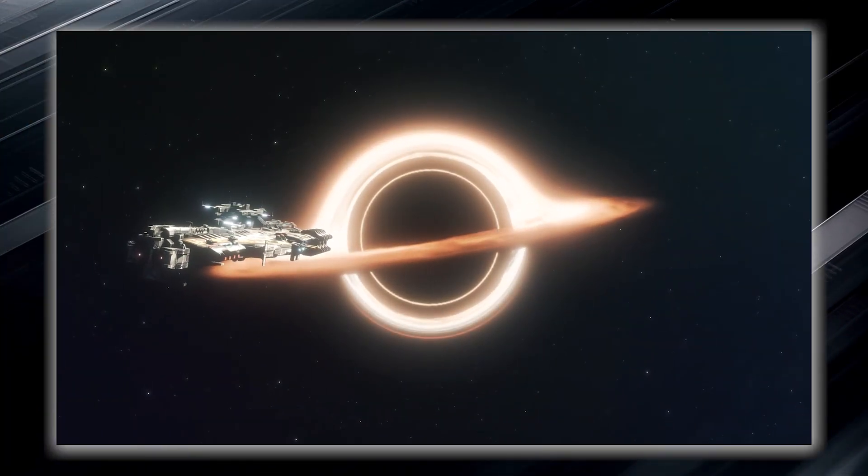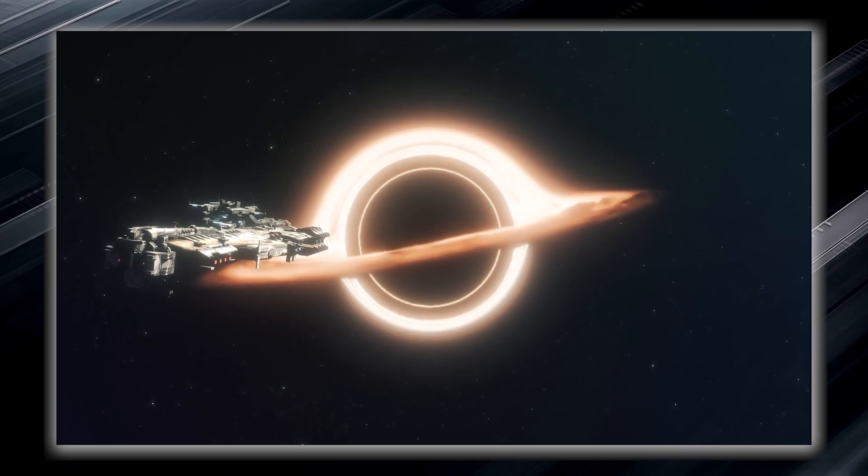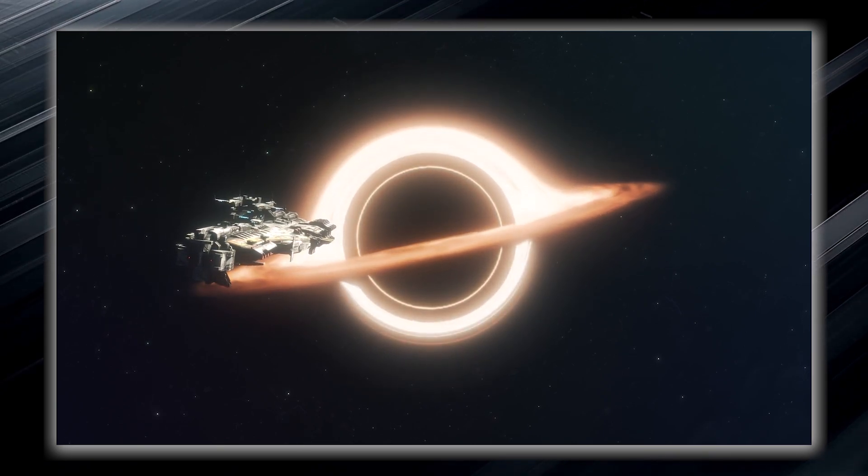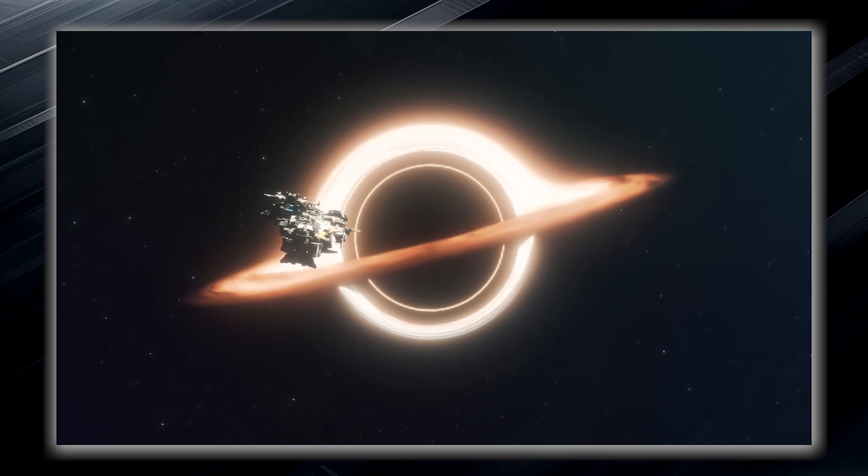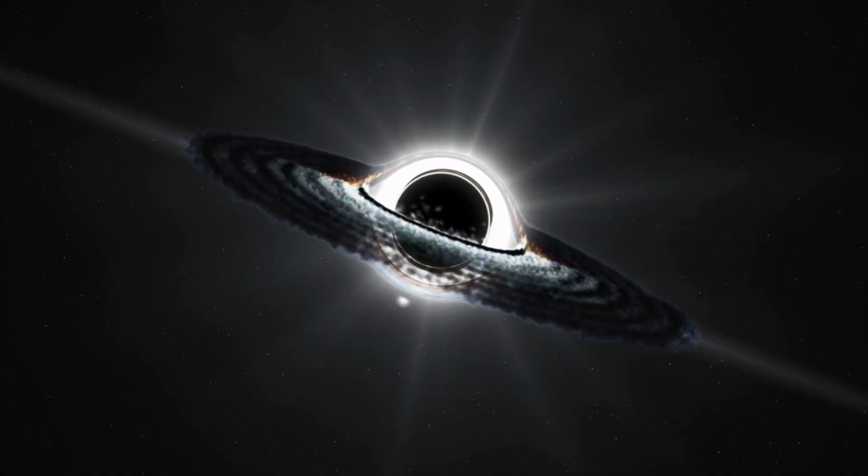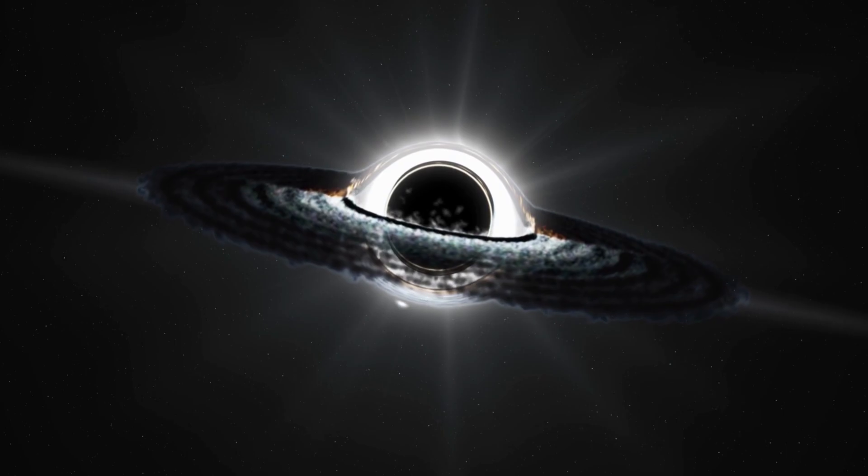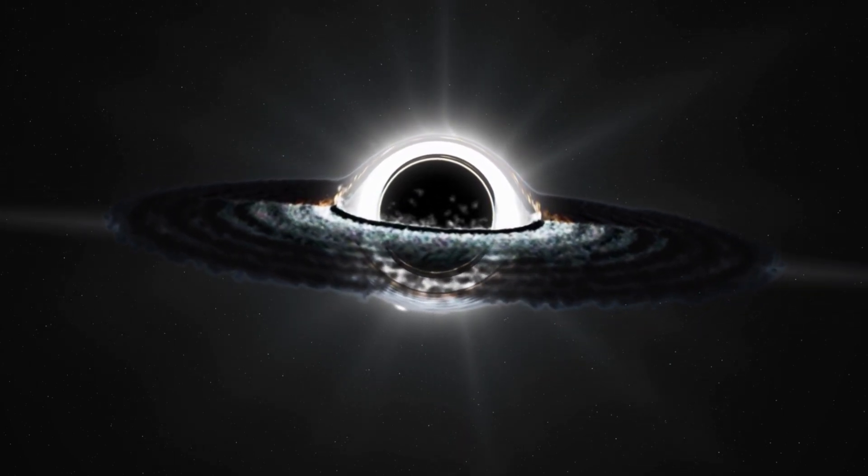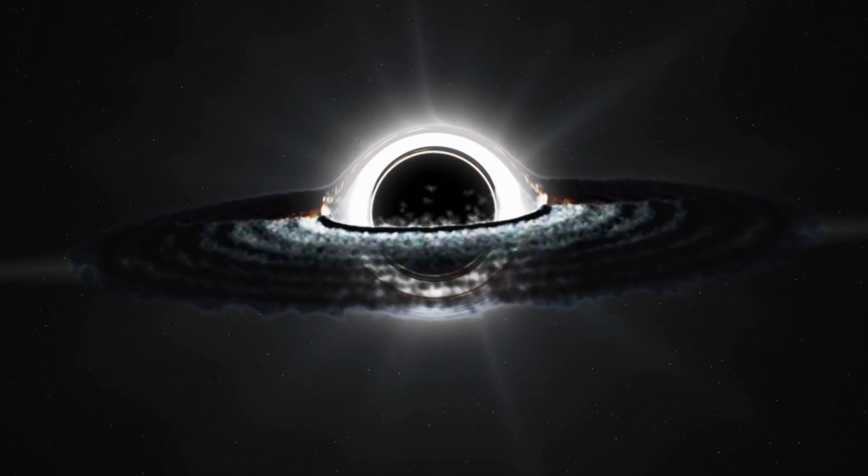Once something, such as an unfortunate spacecraft or even light, crosses its boundary, it can never escape the clutches of the black hole. The event horizon forms an invisible force field that holds everything within it, including light, which is normally considered the fastest entity in the universe.